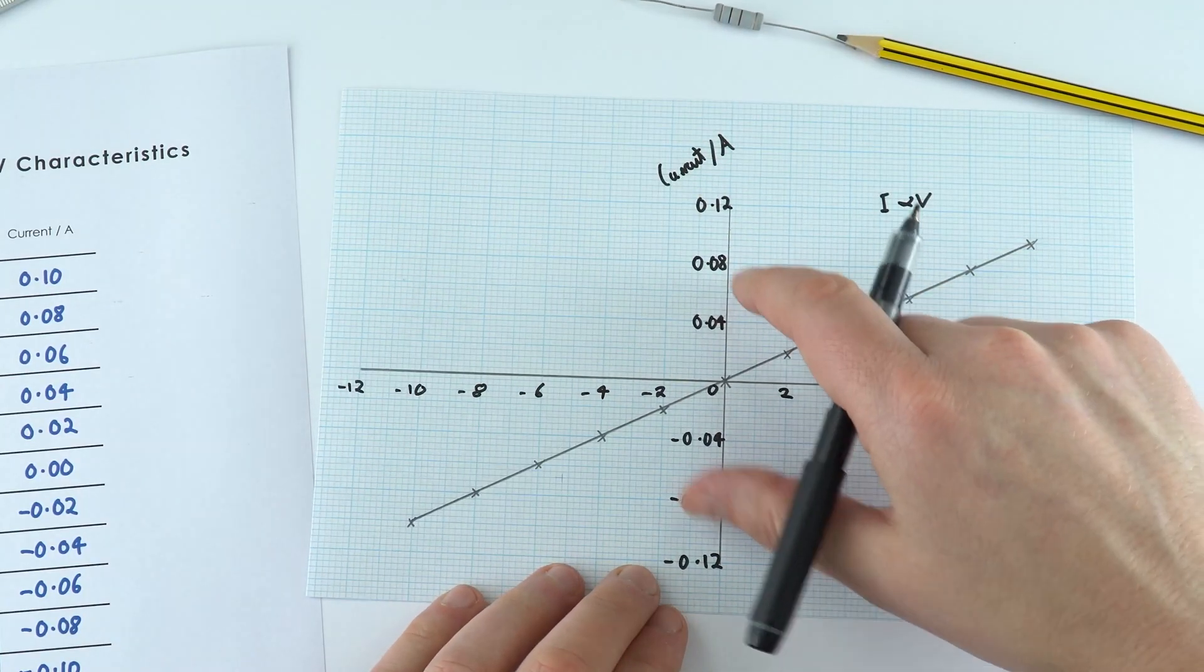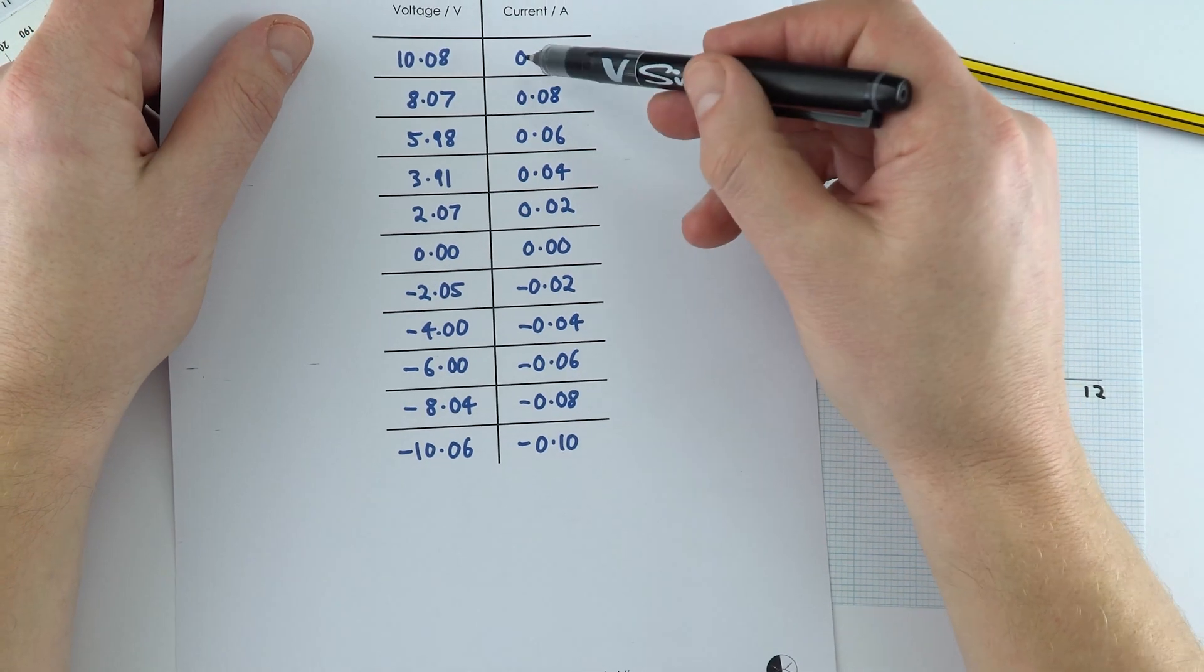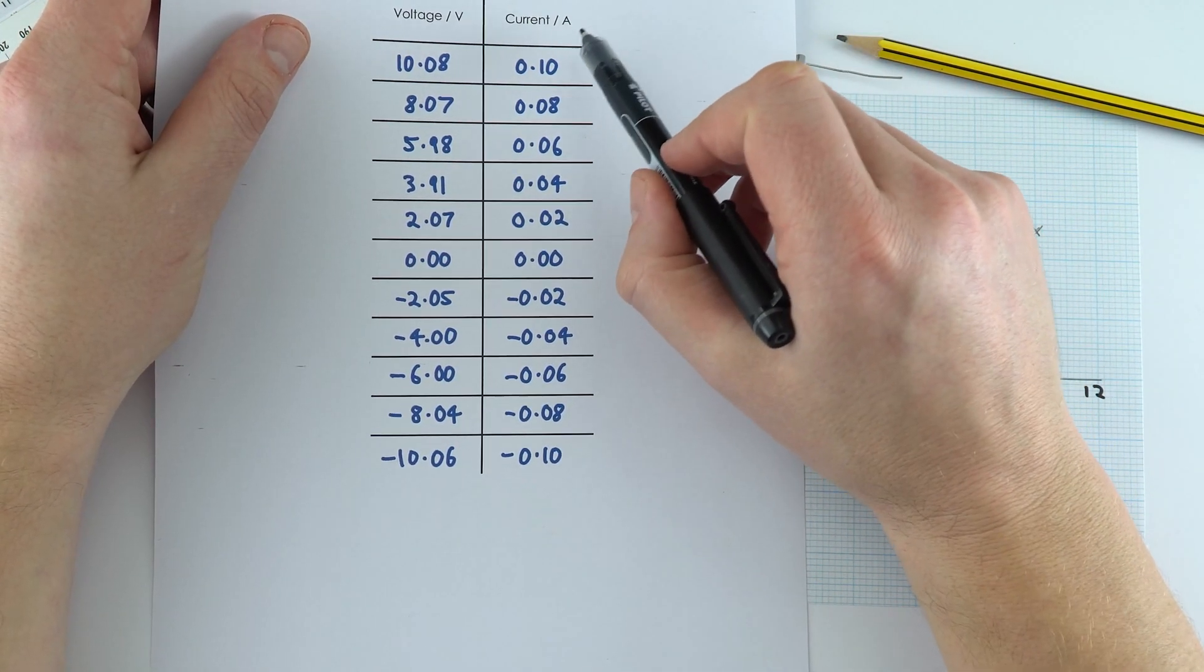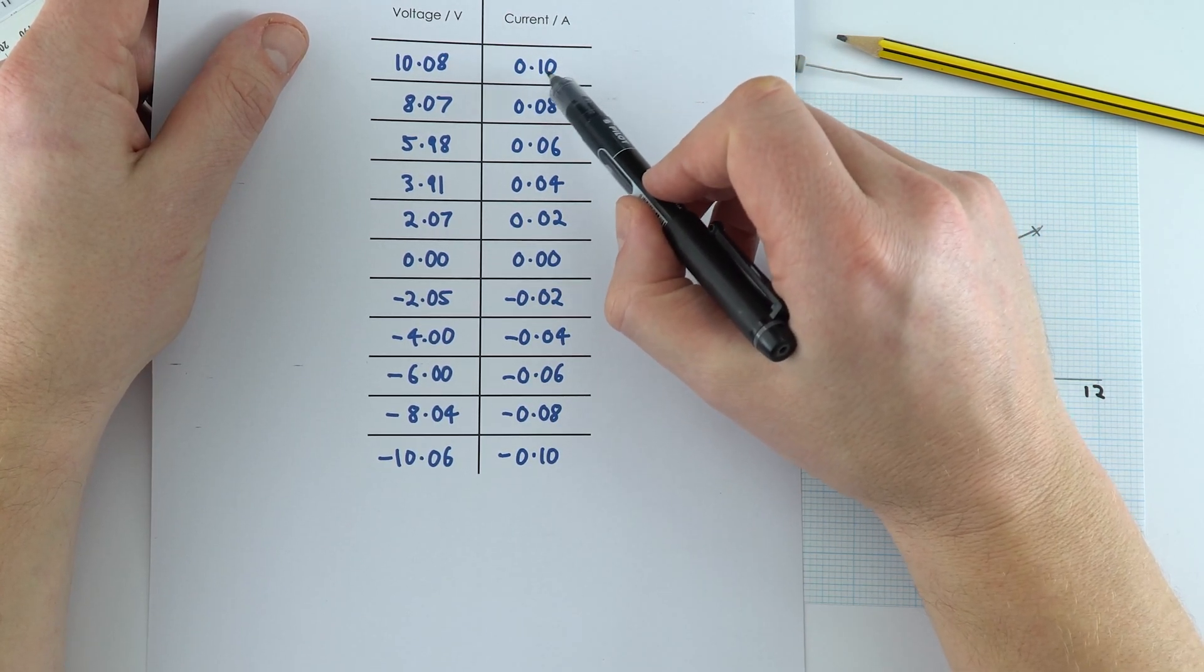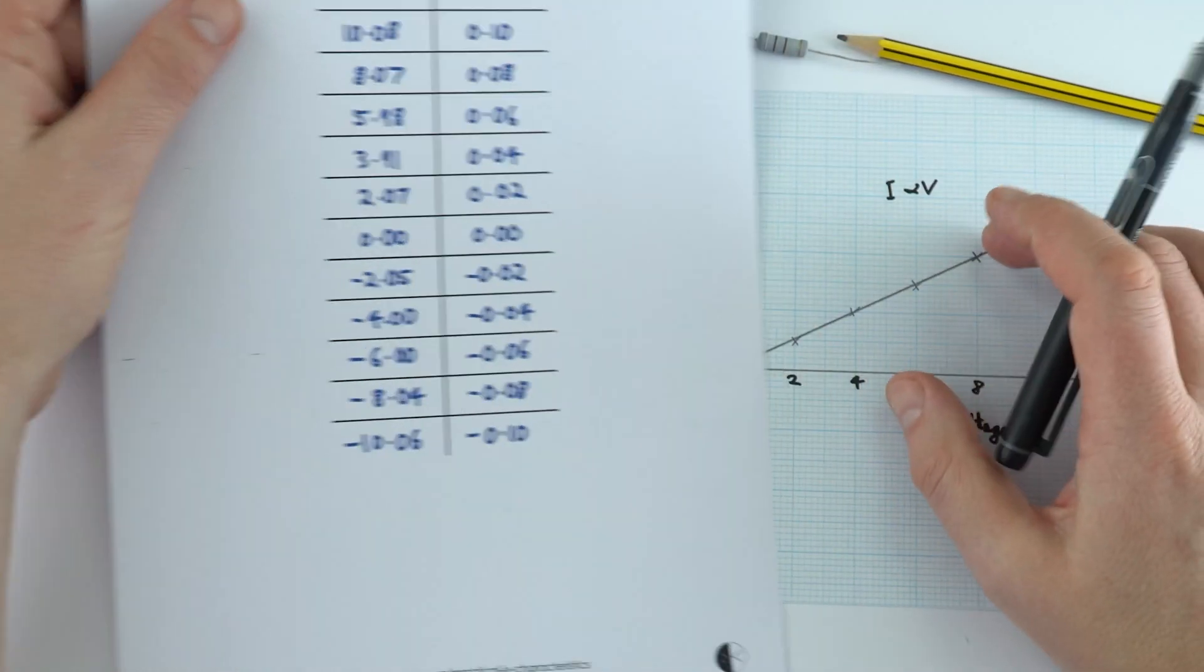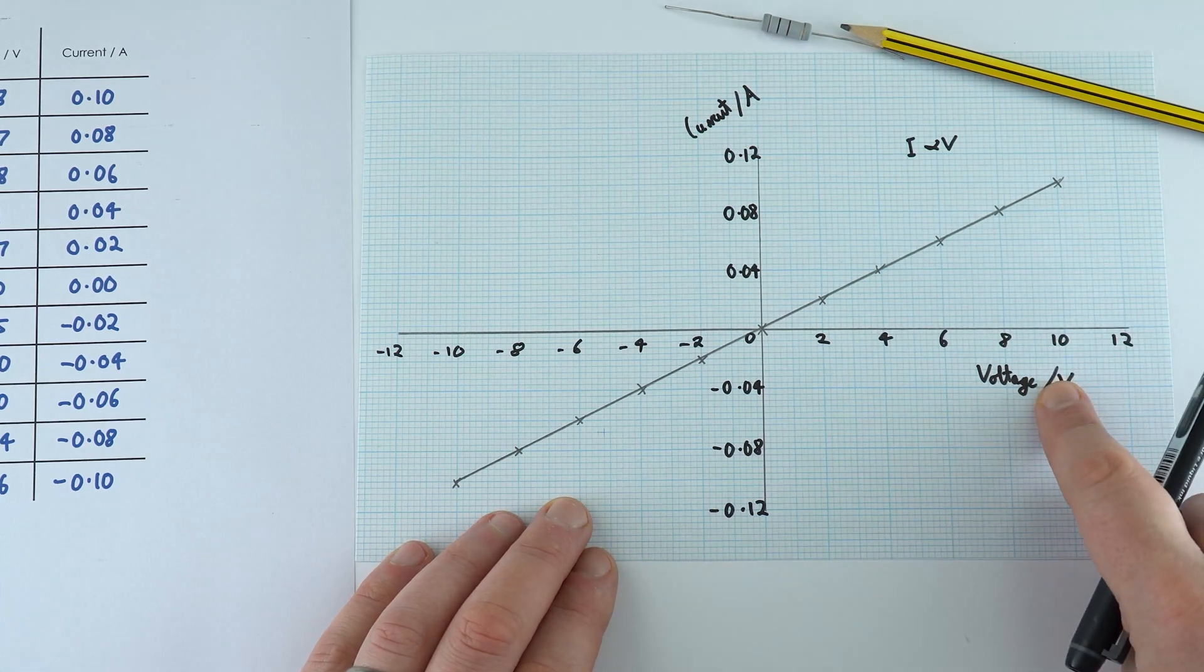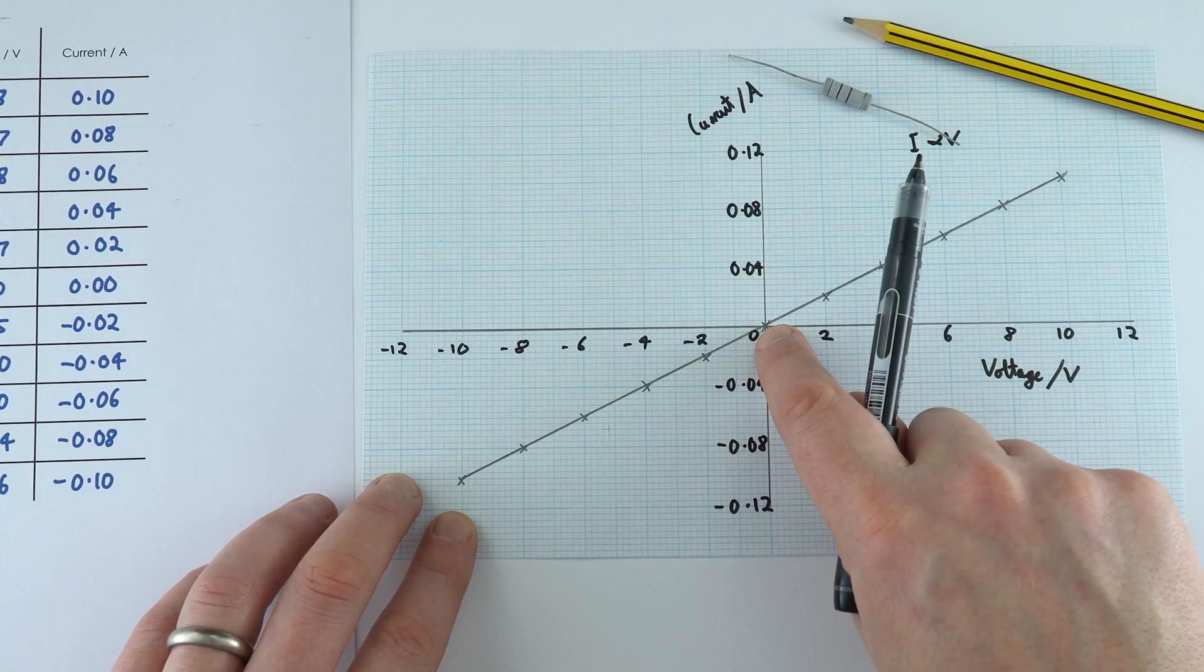One criticism of these results is that the current only went up to 0.10. Maybe I didn't have the most suitable ammeter. It would have been better if we could have measured this value to more than just two decimal places. But I still think this shows a good relationship between the current and potential difference for a fixed resistor. It's a straight line that goes through the origin.